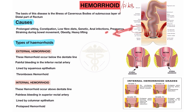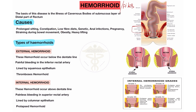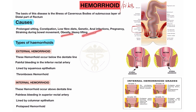Pregnancy — due to pregnancy, inflammation can occur in the region of the anal area and anal sphincter, which also causes hemorrhoid. Straining during bowel movement — when someone has constipation, they apply pressure during bowel movement, which also causes hemorrhoid. Obesity and heavy lifting — when a person is a heavy lifter, it also causes hemorrhoid.